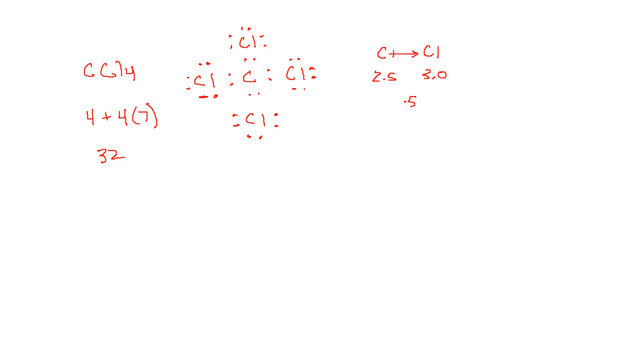We can symbolize that as an arrow, a vector, that shows the electrons spend more time around the chlorine than the carbon because chlorine is more electronegative. Another way we do this is we use a lower case delta symbol. This would be partially positive on carbon and partially negative on chlorine. That also indicates a polar covalent bond.